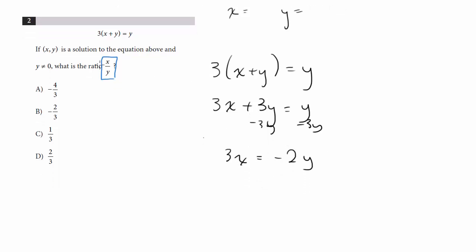And now, I want to get x over y. So let me divide both sides by 3. So I'm going to get x is equal to negative 2 thirds y. And now let me divide both sides by y. Because what I'm going to get is, on the left side, x over y, which is exactly what I want, equals negative 2 thirds.